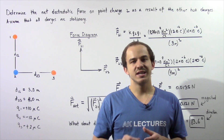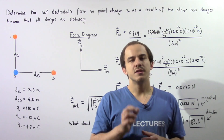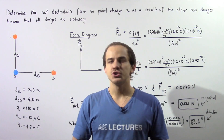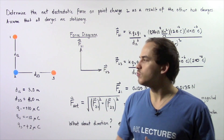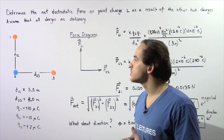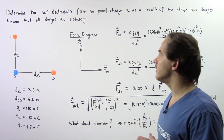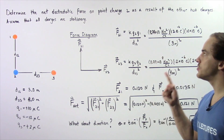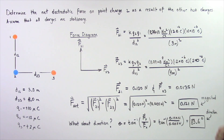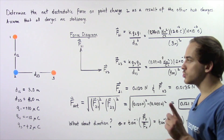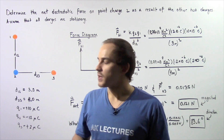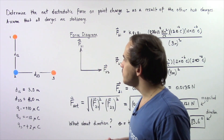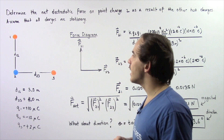In this example we're going to calculate the net electrostatic force that's acting on one of the point charges due to the other two point charges. Determine the net electrostatic force on point charge number two as a result of the other two point charges. Assume that all point charges are stationary. Let's begin by looking at the following diagram.